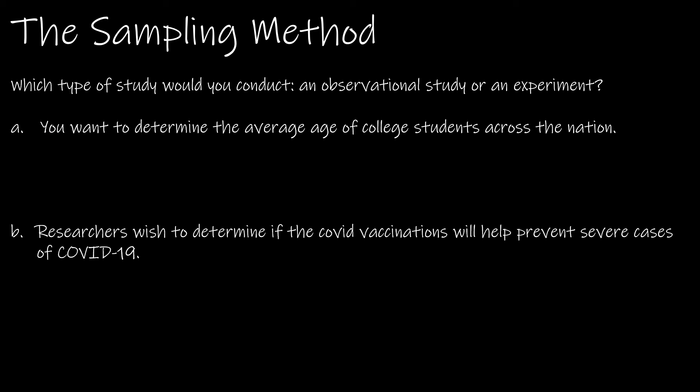Let's quickly look at two scenarios and determine whether an observational study or an experiment would be the best fit. The first question: we want to determine the average age of college students across the nation. Would we choose an observational study or an experiment? If we're just determining the average age, we're going to observe that and collect that data — so that's an observational study. We're not experimenting, and we're not trying to determine cause and effect.